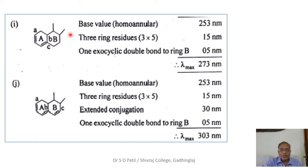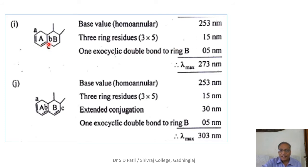In this first problem, the base value for a homoannular diene is 253 nm because the diene system is homoannular — both double bonds are in ring A. There are three ring residues labeled A, B, and C, contributing an increment of 15 nm. The double bond at this position is exocyclic to ring B, so one exocyclic double bond adds 5 nm. Therefore, the lambda max value is 253 + 15 + 5 = 273 nm.